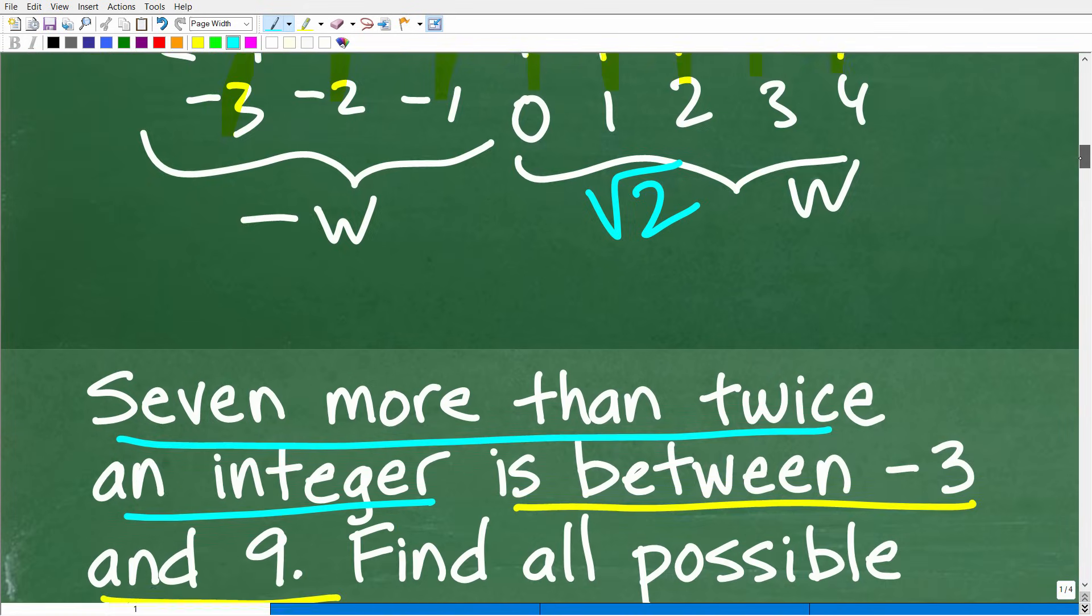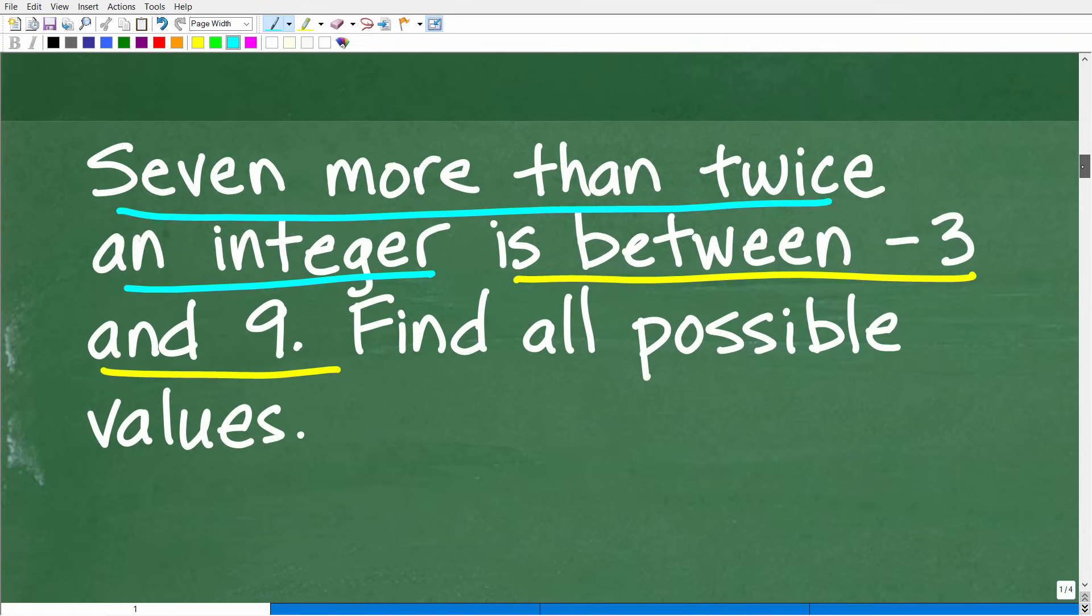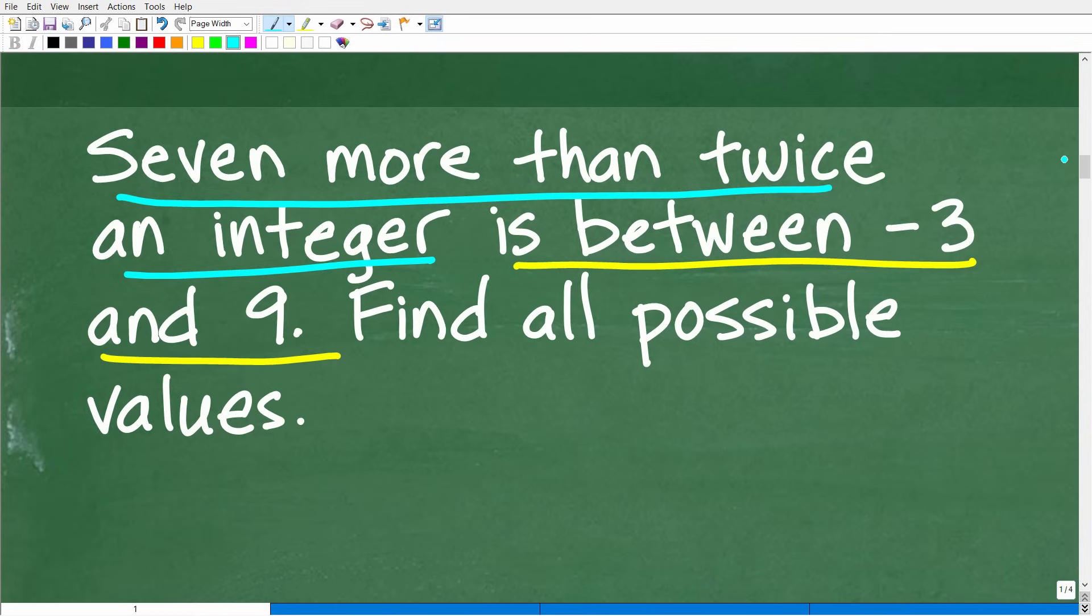That is what an integer is. Now let's go back to our problem. We have seven more than twice an integer. We'll let that variable x represent an integer, because we're trying to solve this problem and we don't know what integer.